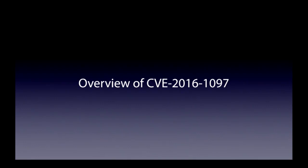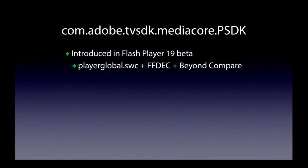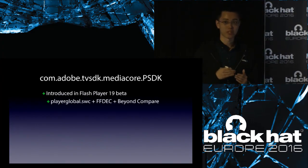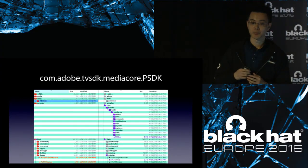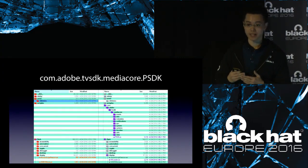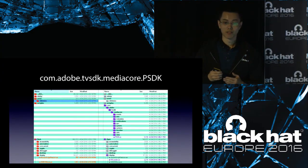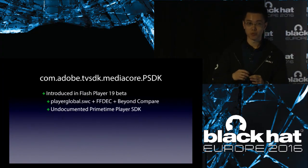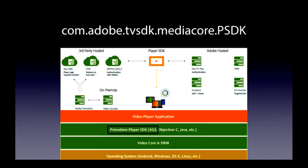CVE-2016-197 is the use-after-free I discovered in the PSDK class. PSDK belongs to the MediaCore package. I think this package was first introduced into Flash version 19. I discovered this package by decompiling the player global file and cross-comparing it with its old version. There were many classes under this package, but all of these classes are undocumented. There is only some related information that can be found from another Adobe product called the PrimeTime Player SDK. This SDK is mainly used to develop TV-based cross-platform applications. For the PC environment, the SDK is a bunch of ActionScript files. So my best guess is that the package I found is a native implementation of this SDK inside Flash Player to accelerate running speed.